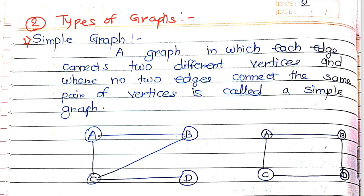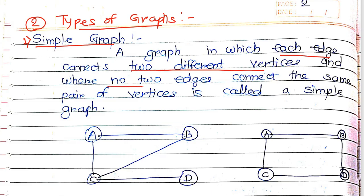In this topic we are going to study the types of graphs. There are multiple types of graphs. The first one is simple graph. A simple graph is defined as a graph in which each edge connects two different vertices, and where no two edges connect the same pair of vertices.